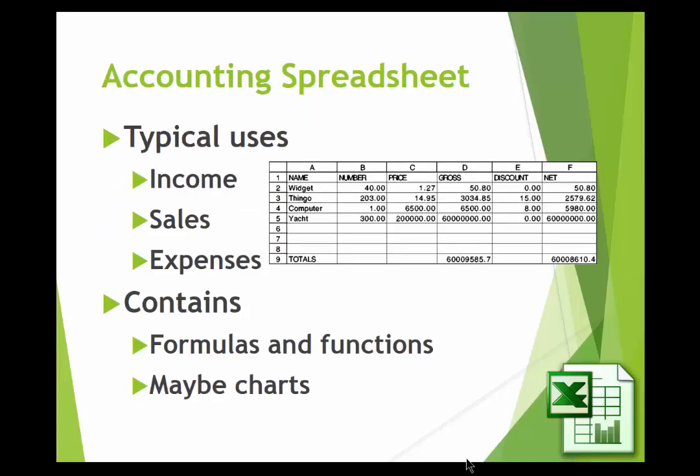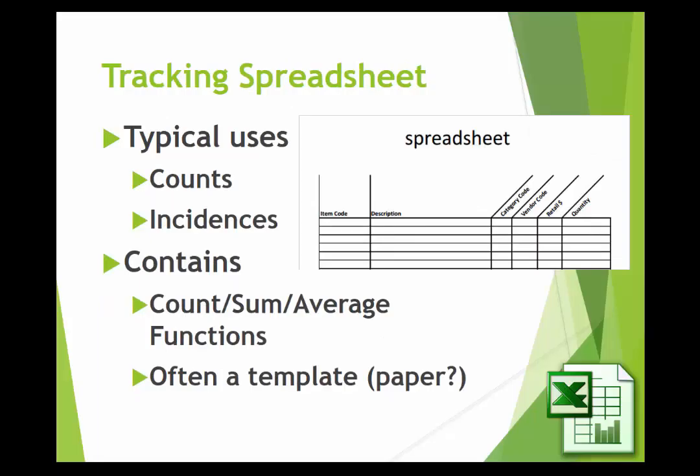Here's an accounting kind of spreadsheet — typically income, sales, expenses, something like that. It will contain formulas and functions, maybe some charts. A tracking spreadsheet would be used to keep track of how many of something, and it might have a count, a sum, or an average as functions that it uses.